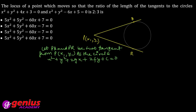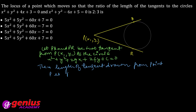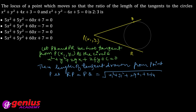12th December ki quiz ka solution dekhe. First question: the locus of a point which moves so that the ratio of the length of tangents to the two circles is 2:3. You have to find out what is the locus of that point. First of all, I made a circle. Let PQ and PR be two tangents drawn from point P(X1, Y1) to the circle. The equation of the circle is a general equation. The length of tangent drawn from point P is PQ equal to under root of X1² + Y1² + 2GX1 + 2FY1 + C.